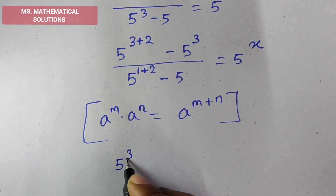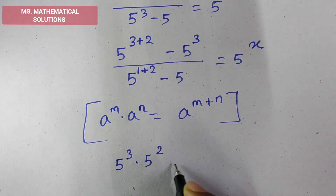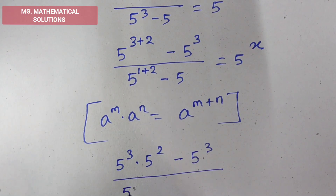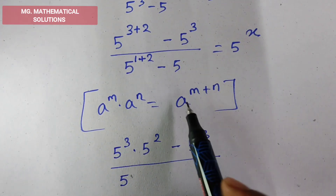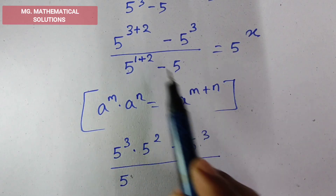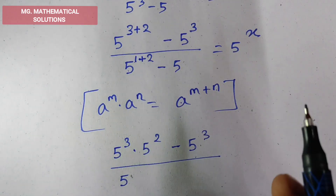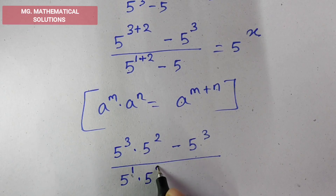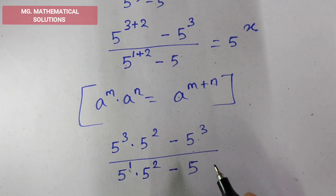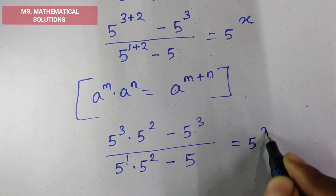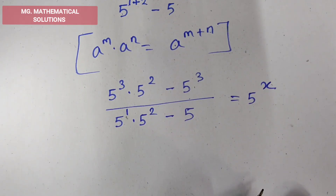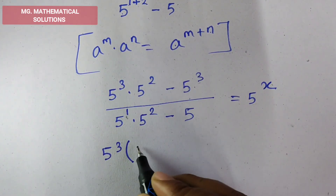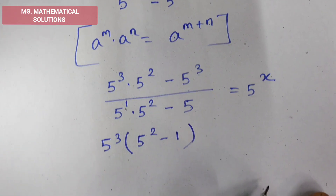So, 5 cube times 5 square minus 5 cube — here a means 5, m means 1 and n means 2 — so 5 to the power 1 times 5 square minus 5, equal to 5 to the power x. Now we take common 5 cube, so here we get 5 square minus 1.